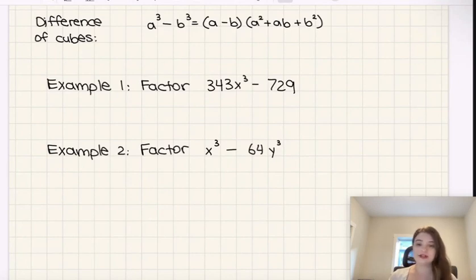So to factor a difference of cubes, we can write it as a minus b times a squared plus ab plus b squared. First thing we need to do whenever we're factoring a difference of cubes is we need to figure out what a and b are by taking the cube root of both of our terms.